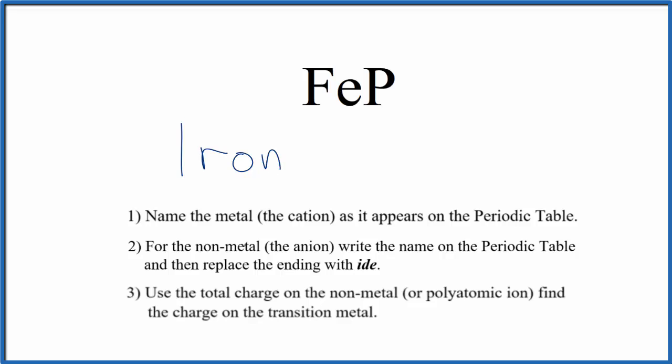Next we're going to write the name for the non-metal as it appears on the periodic table. P, that's phosphorus, lowercase p, and then we'll replace the ending, this O-R-O-U-S, with I-D-E.